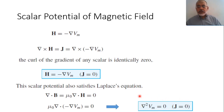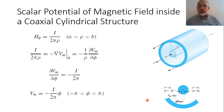In this case, the scalar magnetic potential is governed by Laplace's equation. Following similar steps for solving Laplace's equation, we can apply it to the case of a magnetic field problem. As an example, if we have a coaxial structure where the magnetic field H_phi = I / (2π ρ).